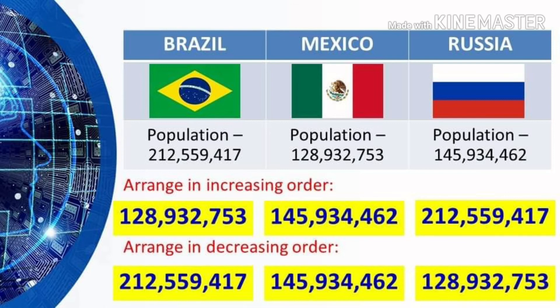If we arrange the population in increasing order, Mexico comes first, followed by Russia, then finally Brazil. But if we arrange this population in decreasing order, Brazil comes first, followed by Russia, then finally Mexico.